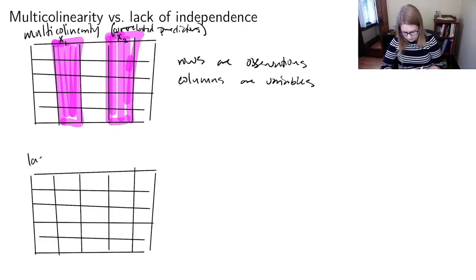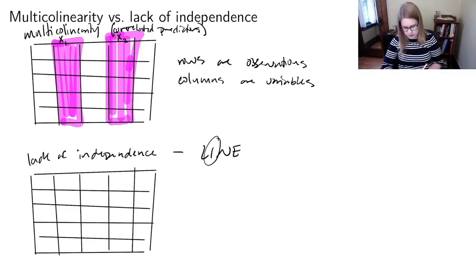Lack of independence, so that's the L-I-N-E conditions. We're thinking about the I there. The lack of independence is about a relationship between the rows. So it's that a particular observation might not be independent from another observation. So these are two different problems. Either way, we should do something to fix it, or we shouldn't model using that data set. But they're separate problems.